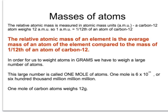We can't weigh individual atoms — they're very, very tiny. So we have to weigh large numbers of atoms. We choose a particular number of atoms which, for carbon, would weigh not 12 atomic mass units, but 12 grams. This number is a very large number: 6 times 10 to the power of 23, or 600,000,000,000,000,000,000 atoms. We call this number one mole of atoms.